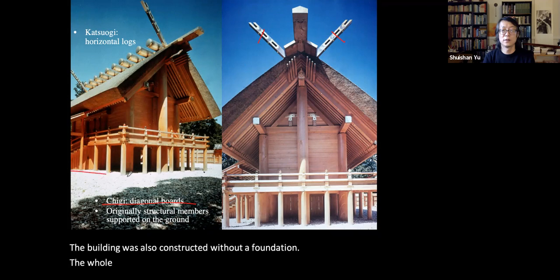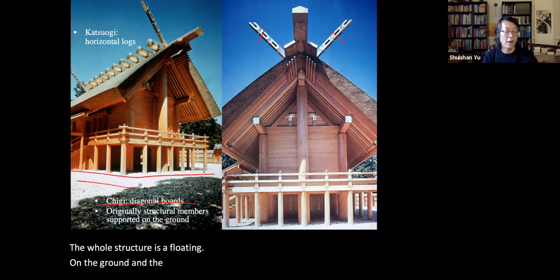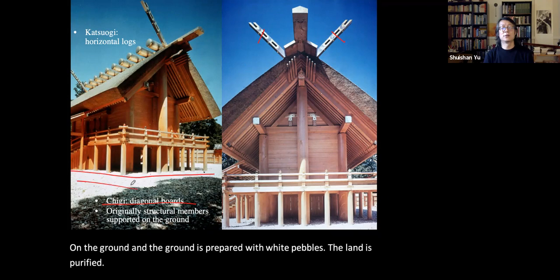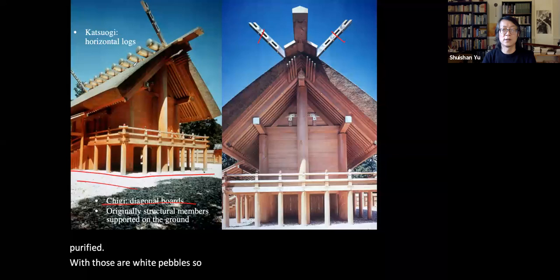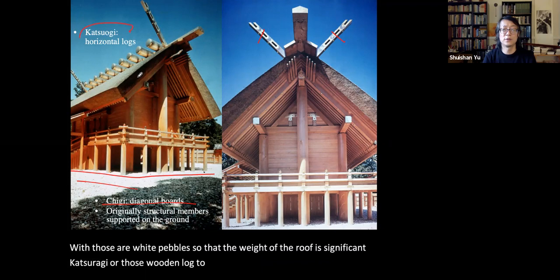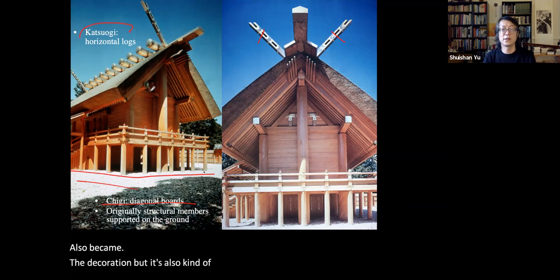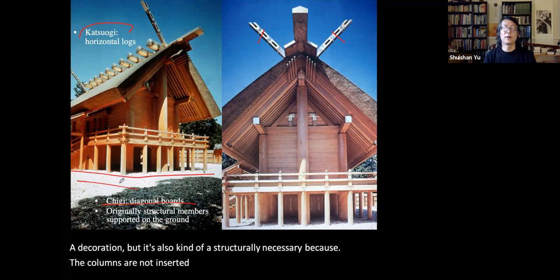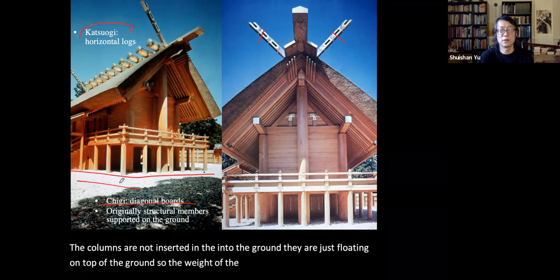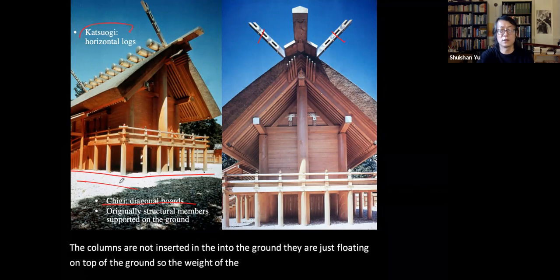The building was also constructed without a foundation — the whole structure floats on the ground, which is prepared with white pebbles to purify the land. The weight of the roof is significant, so katsuogi — wooden logs placed on top to add weight and stabilize the structure — also became a decoration. This is also structurally necessary because the columns are not inserted into the ground but simply rest on top of it, making roof weight critical for the building's stability.